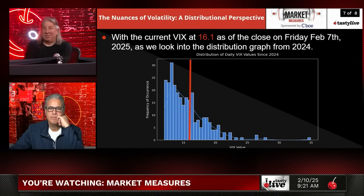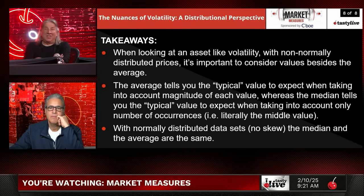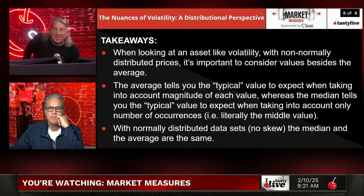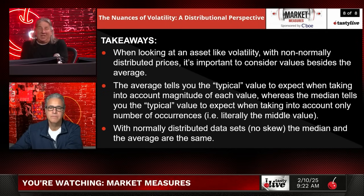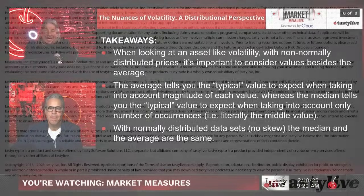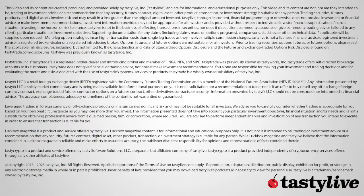Some takeaways: when looking at an asset like volatility with non-normally distributed prices, it's important to consider values besides just the average. The average tells you the typical value when accounting for the magnitude of each value, whereas the median tells you the typical value accounting only for the number of occurrences — literally the middle value. With normally distributed data sets — no skew — the median and average are the same. That's how you get down to that 16 level, showing there's a pretty low chance of the VIX being over 30, and a high chance of it trading below that 16 level.